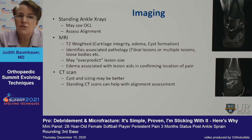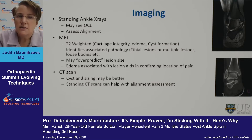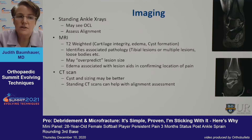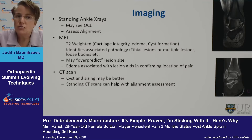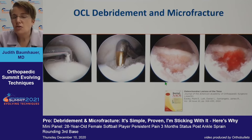Regarding imaging, we need standard ankle views. You may be able to see the lesion but won't be able to size it on plain X-rays. A Saltzman view may be needed to assess alignment. MRI and CT scans are good adjuvant imaging. CT scan may be better for sizing, but MRI allows us to evaluate bone edema. A T2-weighted MRI is appropriate and allows assessment of other structures such as tendons. Bone edema on MRI guides you that this may be the source of the patient's ankle pain, and cysts can also be identified.